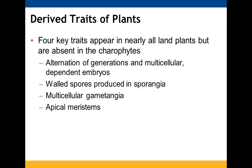The derived traits include the alternation of generations, multicellular and dependent embryos, walled spores produced in sporangia, multicellular gametangia, and apical meristems. We'll talk about each of those coming up.